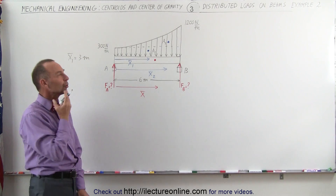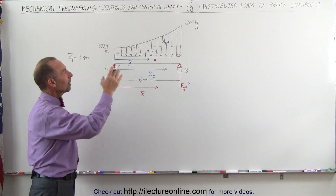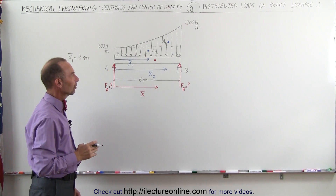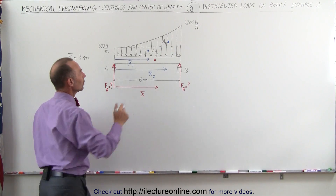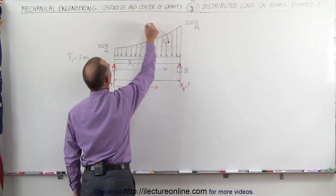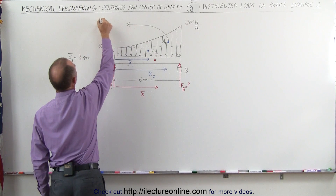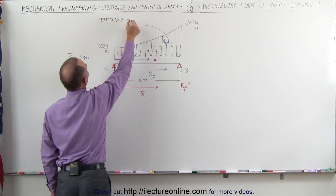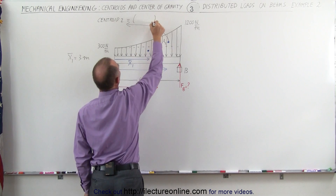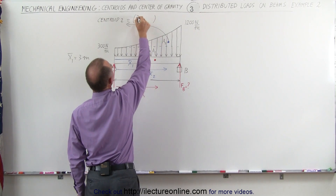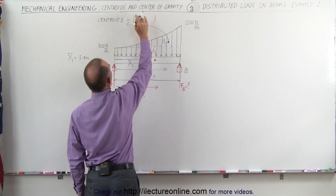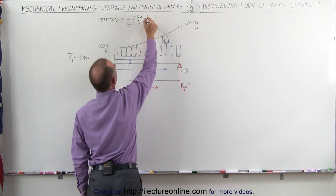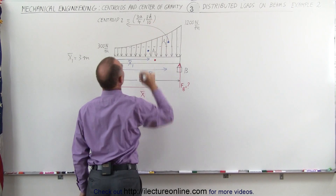Now to find the x-coordinate for the centroid of the parabolic portion of the curve. We know that centroid 2 can be found using the coordinates: 3A divided by 4 for the horizontal position, and 3H divided by 10 for the vertical.